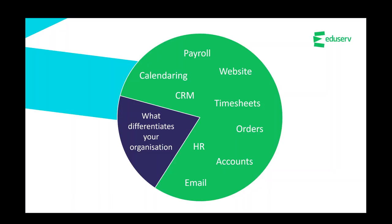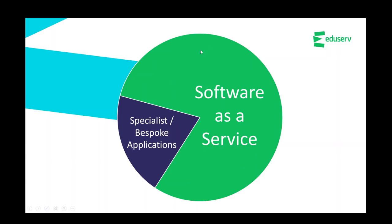Which is the better fit? A mixed economy is advisable. The majority of most organizations' ICT supports common business activities — payroll, HR, accounts, email, timesheets, CRM, websites. The work that differentiates your organization is typically supported by a smaller subset of ICT. Common business applications are ripe for SaaS, while your key differentiating activities are more likely to require specialist or bespoke applications hosted in IaaS — though they could equally be specialist SaaS.